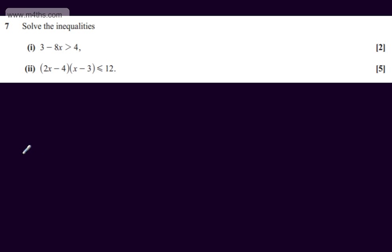In question number 7, we're asked to solve the inequalities: 3 minus 8x is greater than 4 for 2 marks, and the quantity 2x minus 4 multiplied by the quantity x minus 3 is equal to or less than 12 for 5 marks.